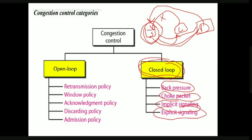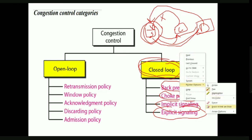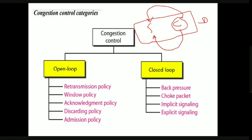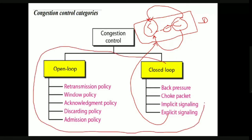The fourth closed loop technique is explicit signaling. The congested node explicitly sends congestion information to the source. Unlike choke packets — where a separate packet is sent — in explicit signaling, the congestion signal is included within the data packet itself as it passes through the network, informing the source to slow down its transmission.